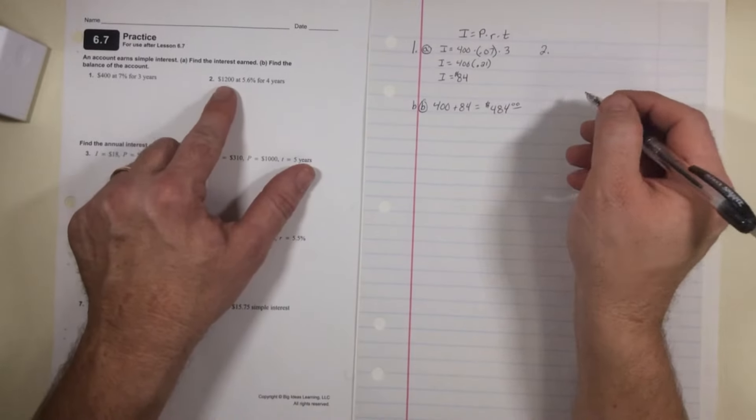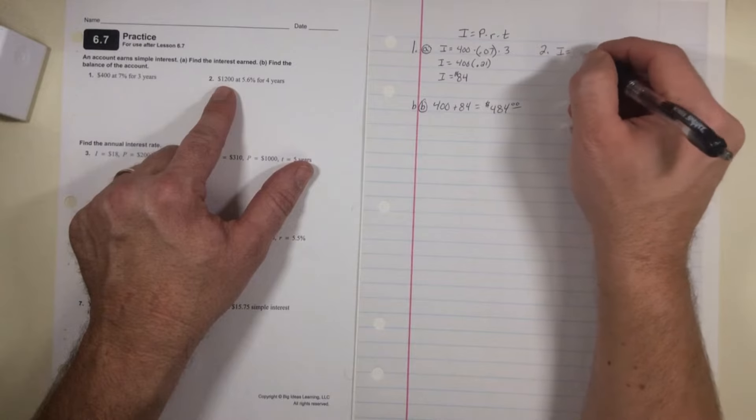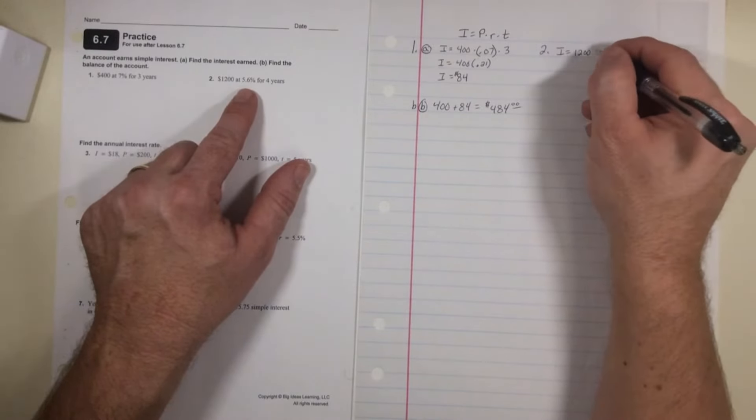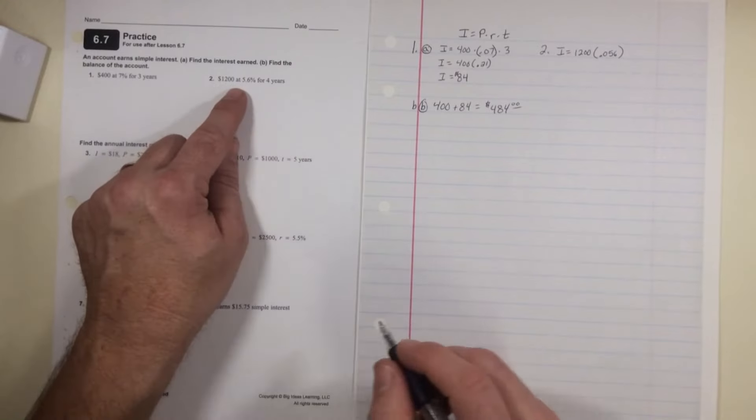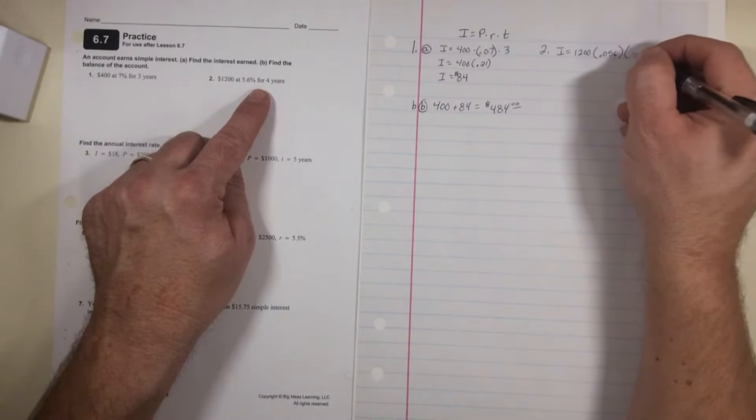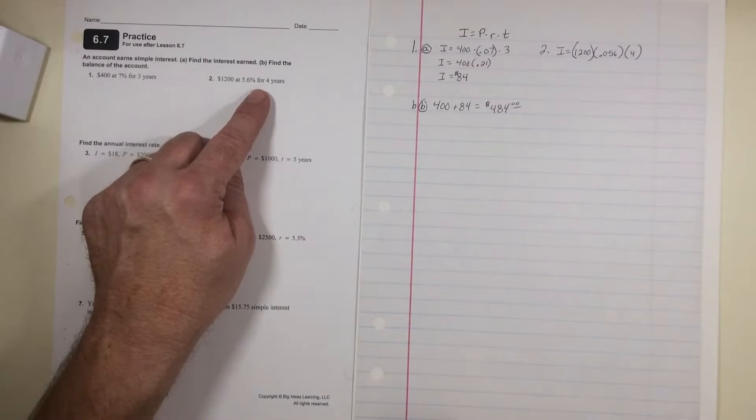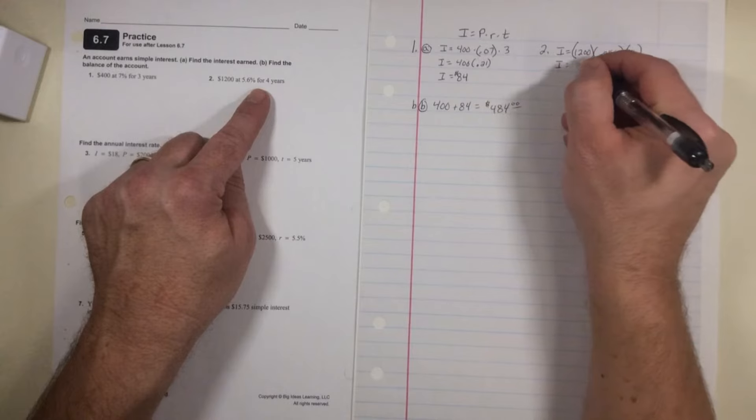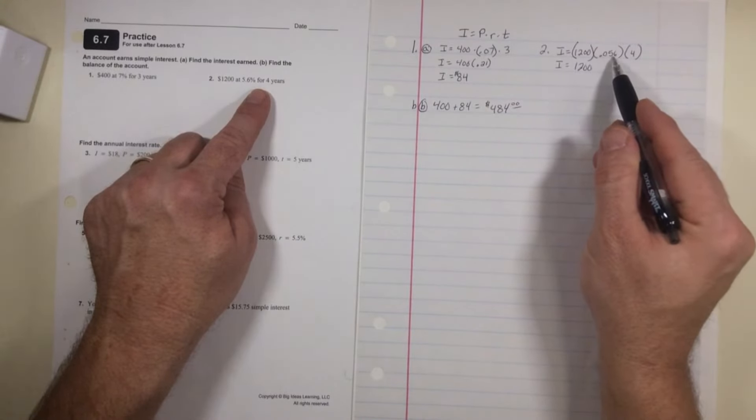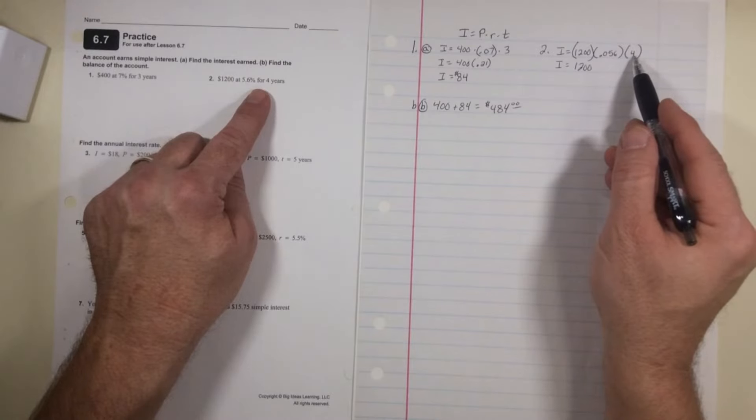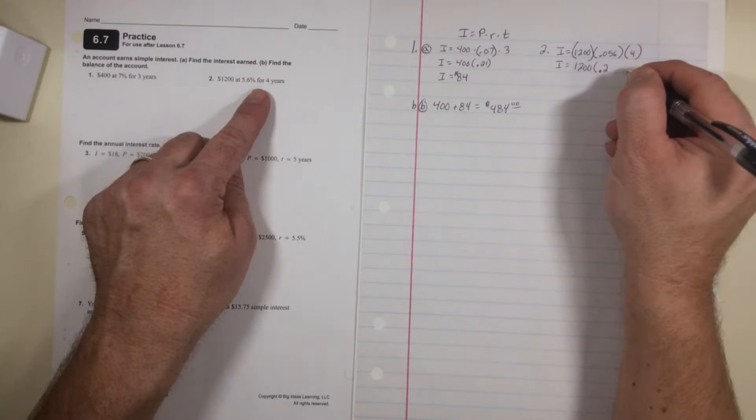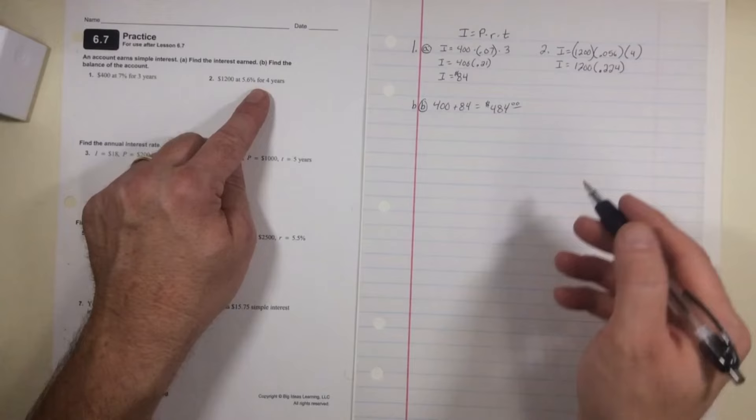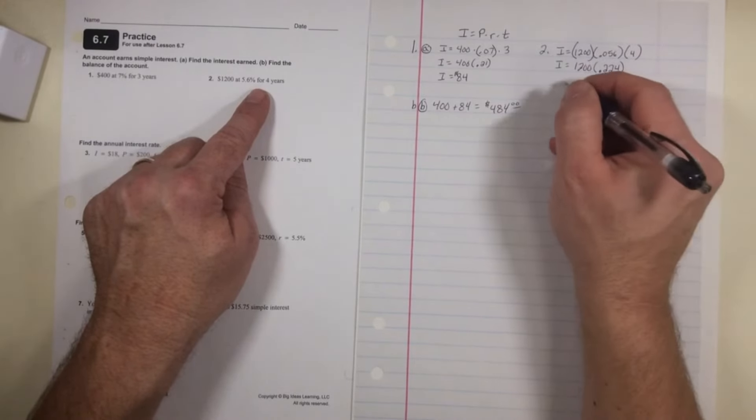Number two, they give us, we put in $1,200. The interest rate here is going to be 0.056 because I move the decimal two places, don't forget. 0.056 for 4 years. So I multiply 0.056 by 4, which will be 0.224, and then I multiply 1,200 by 0.224.